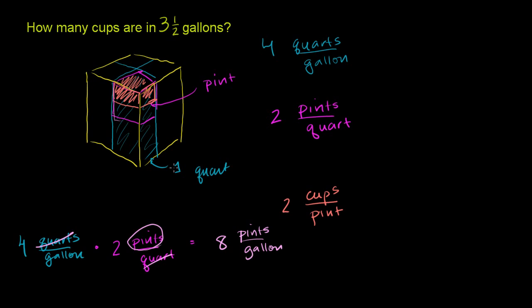Then we can multiply that times 2 cups per pint. The pints in the numerator cancel out with pints in the denominator, and you're left with 8 times 2 is 16 cups per gallon.